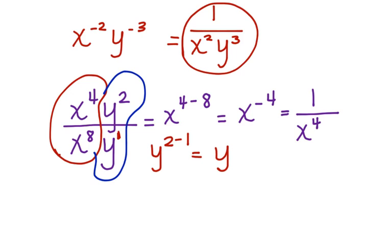Now, where is this y going to be located? It's going to be located in the numerator because this is where the greater value is. So we're going to have y here. So if I was going to simplify this, I could write y over x to the 4th.